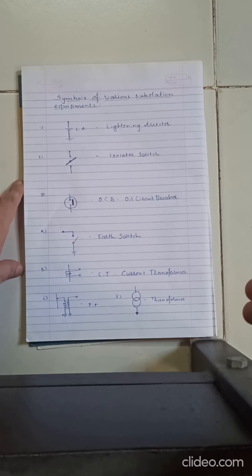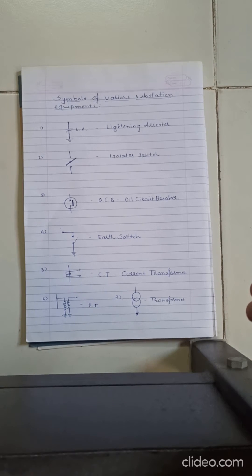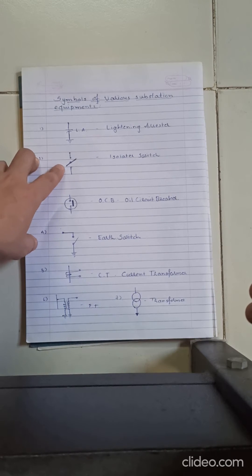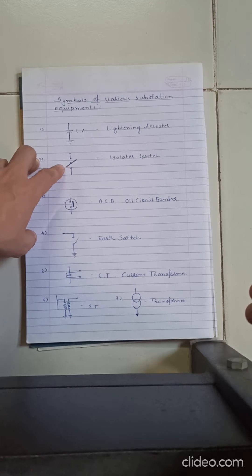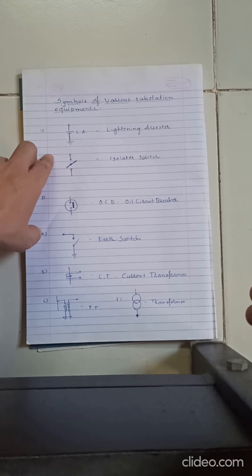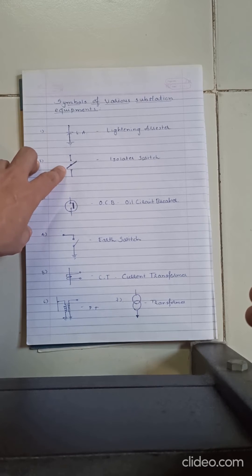Second symbol is for isolator switch. You can see that the pole in the center is having two arms. It can rotate in clockwise direction or anti-clockwise direction. Right now it's open, that means it's not connected with any of the line, not with upper line, not with lower line. This is called isolator switch.